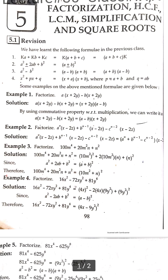We have learned the following formulas from previous class: K(A + B + C) = KA + KB + KC; A² ± 2AB + B² = (A ± B)²; A² - B² = (A - B)(A + B); and X² + BX + Q = (X + A)(X - A) where the factors of Q equal A and B.